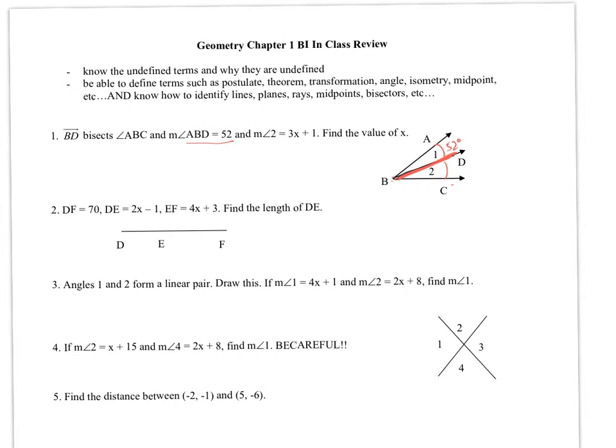They tell me that the measure of angle 2 is 3x plus 1. Since I know that these are equal, I can set them equal to each other. So 3x plus 1 equals 52. We solve for x. 3x equals 51, so x is 51 over 3, which is 17.